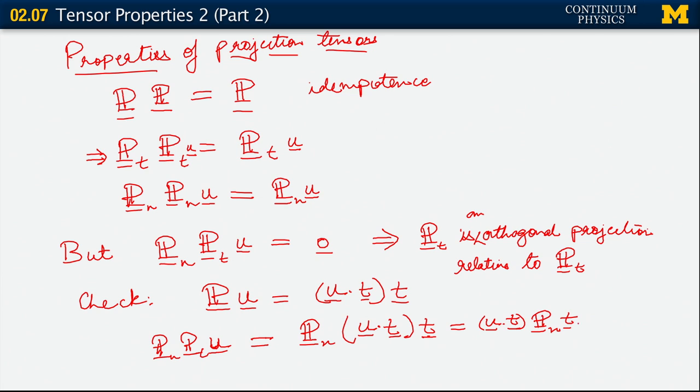Now, P sub n acting on t, we know, is u dot t comes along for the ride. P sub n acting on t, we know, is our identity acting on t minus P sub t acting on t.